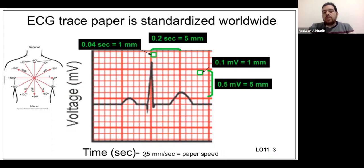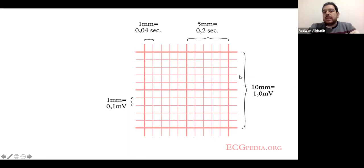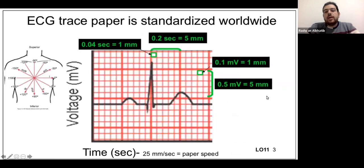If you do the math, every small box in the ECG paper is 0.04 seconds. Every five small boxes give 0.2 seconds, which is one-fifth of a second — that's the time axis. The vertical axis is the voltage axis: one small box is 0.1 millivolt, one big box is 0.5 millivolt, and two large boxes equal one millivolt.